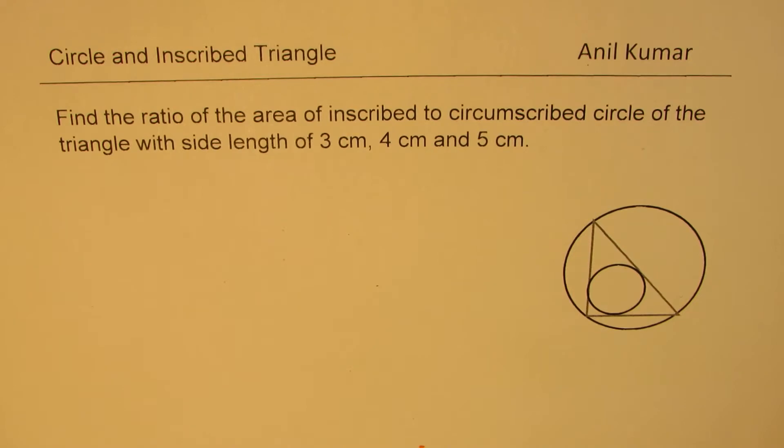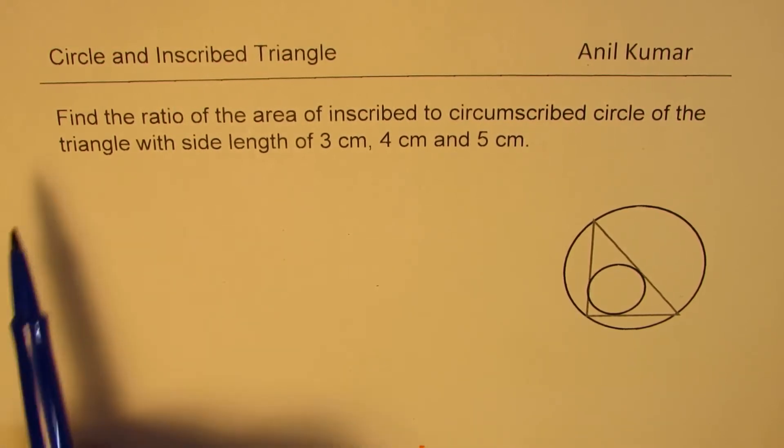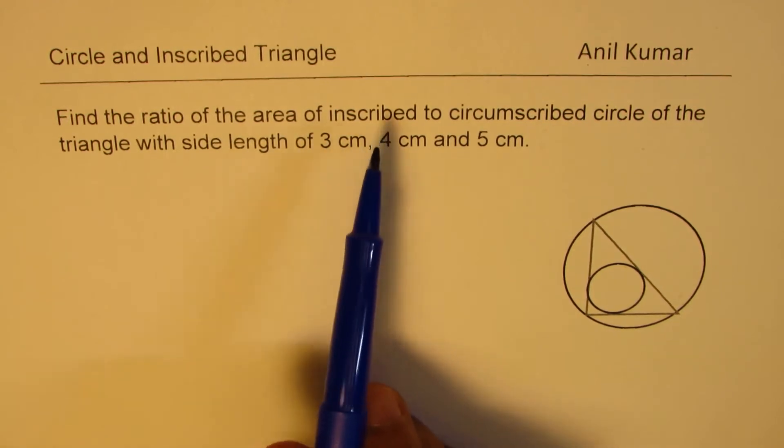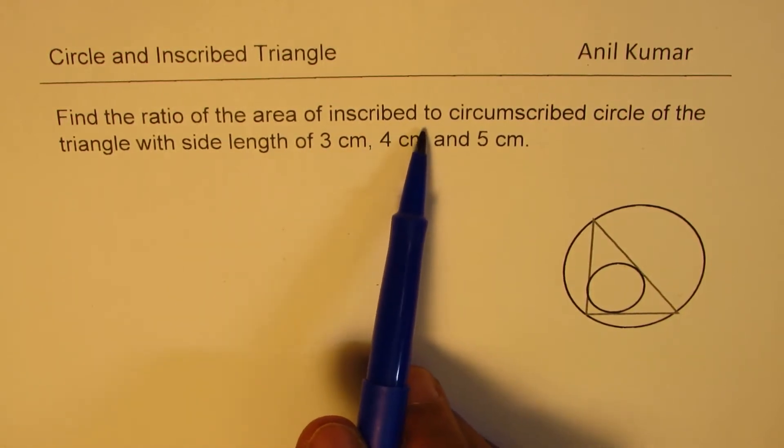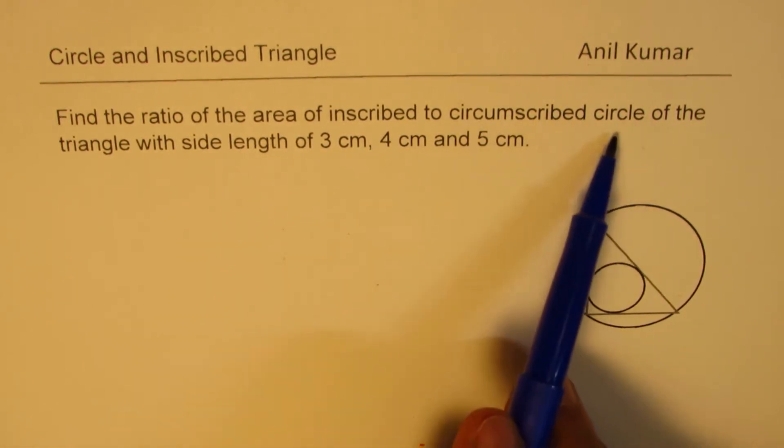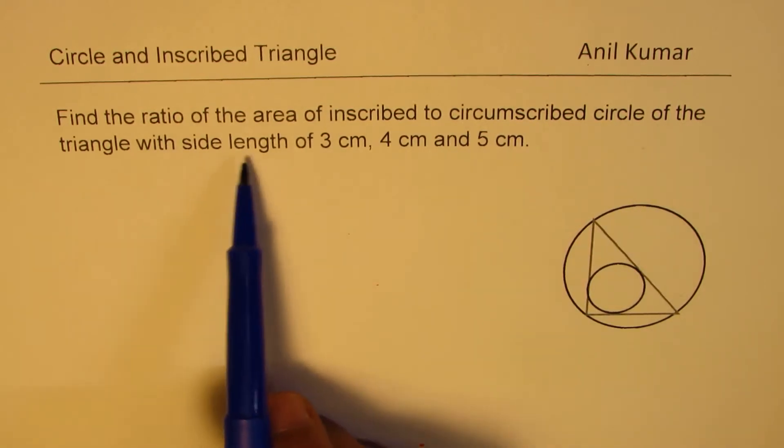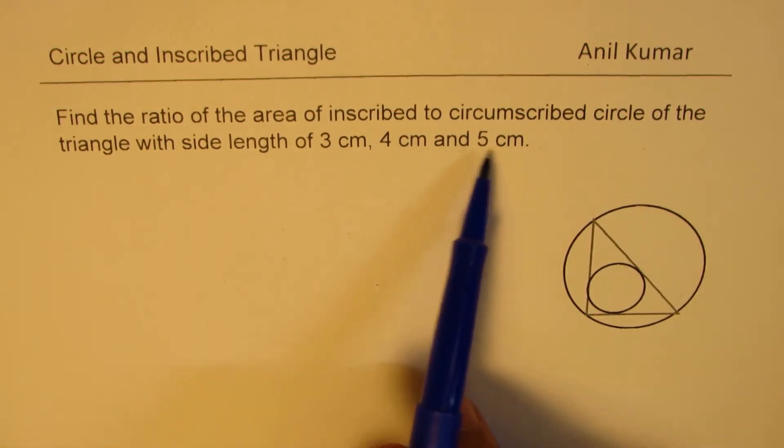Here we will see how circles and triangles combined together creates an interesting question. The problem here is find the ratio of the area of inscribed to circumscribed circle of the triangle with side length of 3 cm, 4 cm and 5 cm.